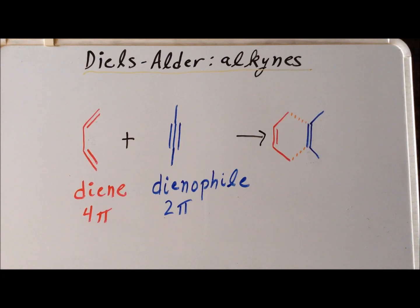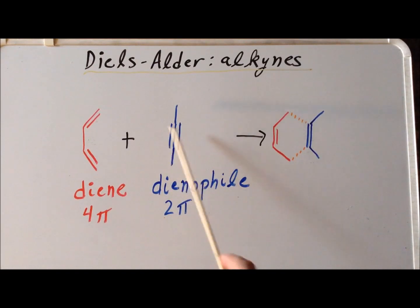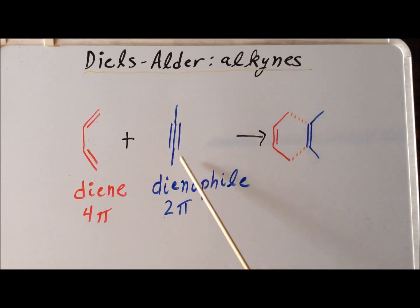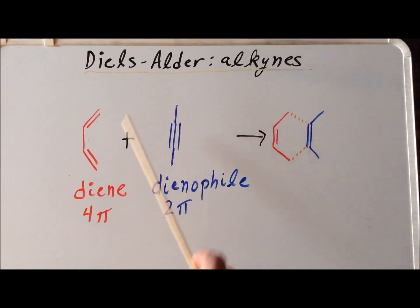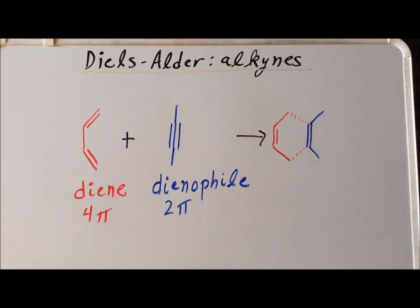For our final alkyne example, we have 2-butyne. We notice that the triple bond is reduced in order to a double bond, but now we have two additional carbons that end up as methyl substituents on the ring. Also notice that starting with this linear alkyne, we end up with the two ring substituents being cis to each other, giving us 1,2-dimethylcyclohexadiene.